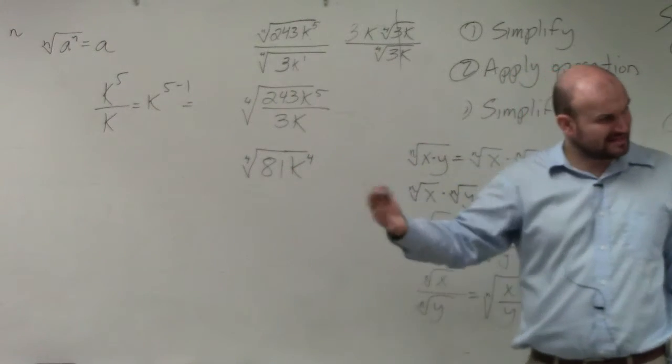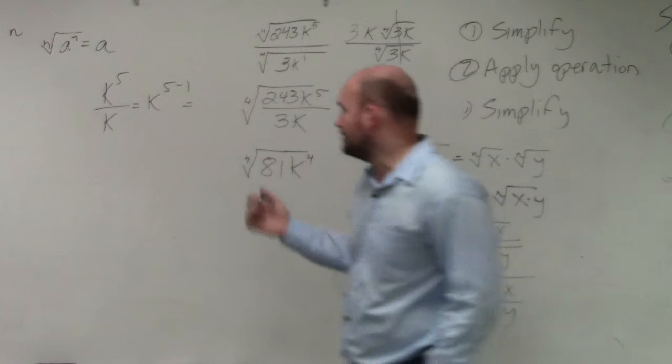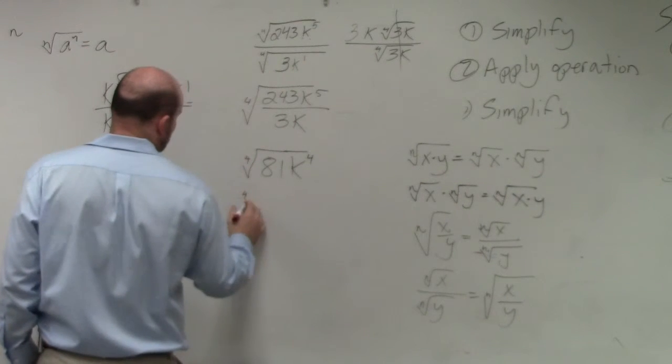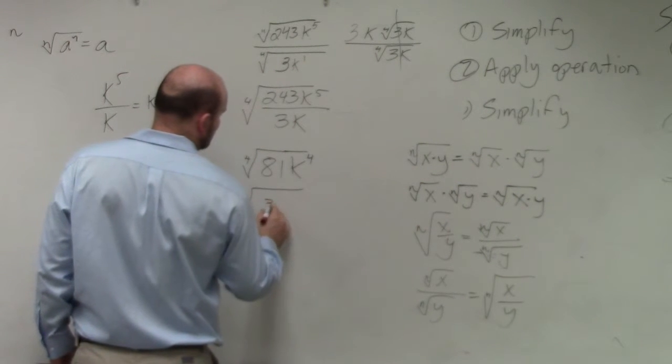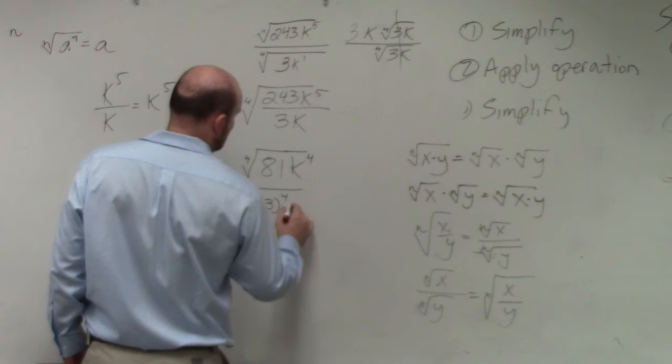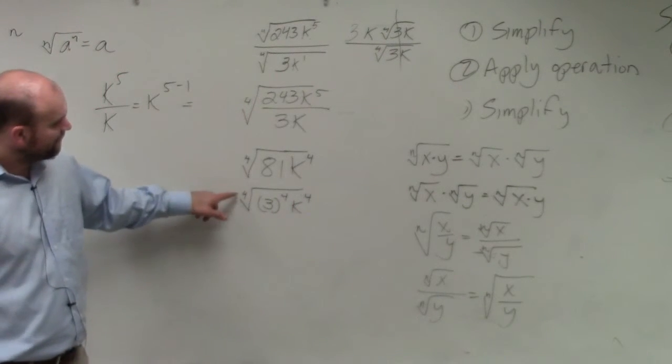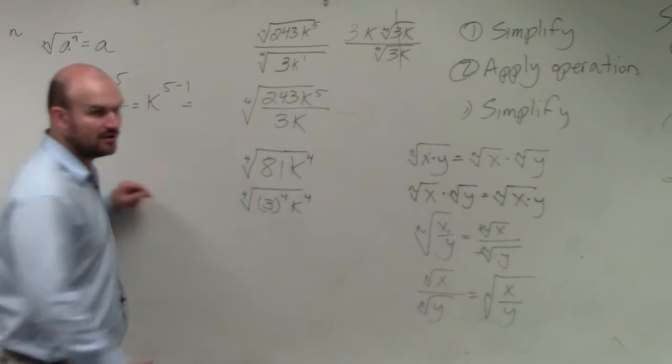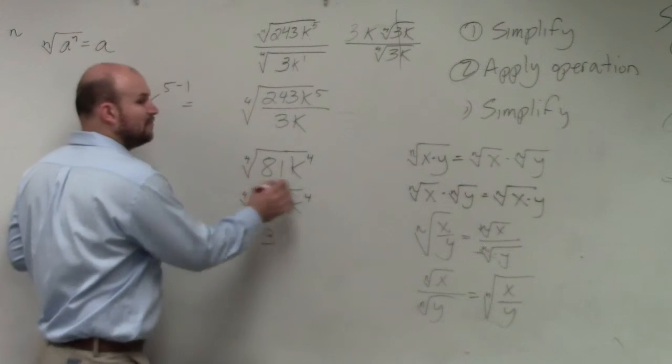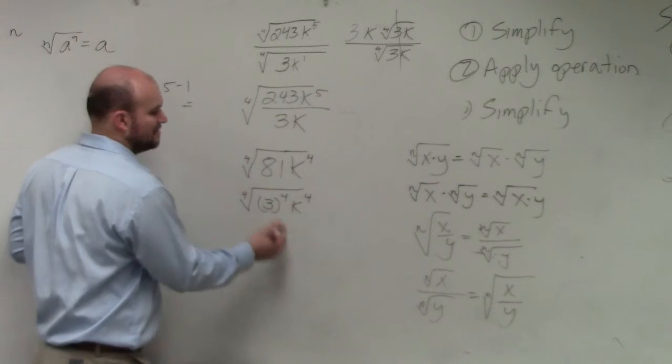So in this case, the fourth root of 81, we want to say, can we write 81 as a power of 3? And the fourth root, 81, can be 3 to the fourth power. And then we have k to the fourth power. So the fourth root of 3 to the fourth power is 3. The fourth root of k to the fourth power is k.